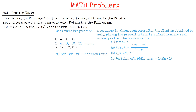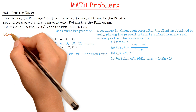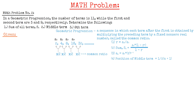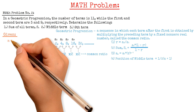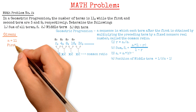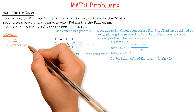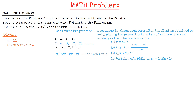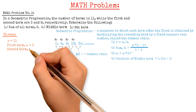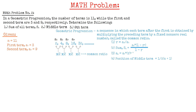Going back to the problem, the given data are the following: the number of all terms N equals 11, the first term A1 is 3, and the second term A2 is equal to 9.